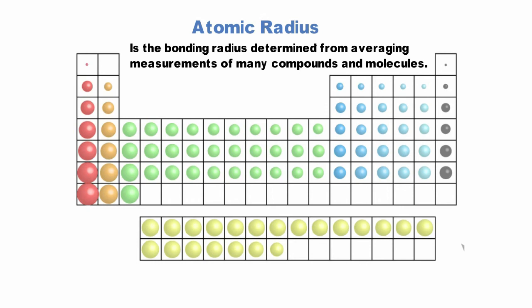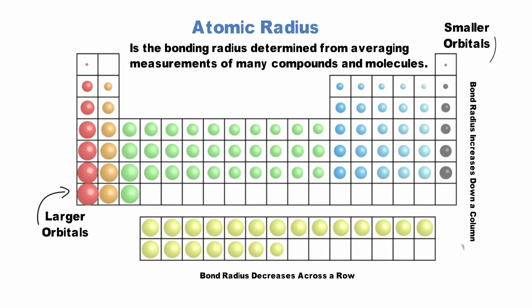Moving down a column on the periodic table, the principal quantum number n of the outermost electrons increases. Orbitals are larger and therefore the atomic radii are larger. Moving across a row on the periodic table, electrons in the outermost shell feel the charge from the nucleus more strongly. The electrons are closer to the nucleus, so orbitals are smaller, therefore the radii are smaller.